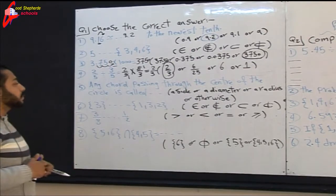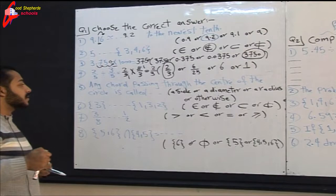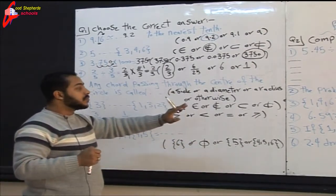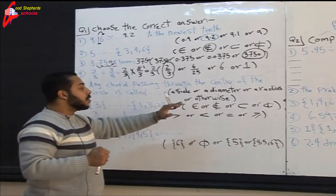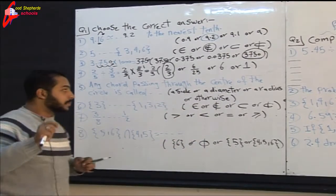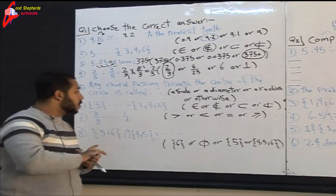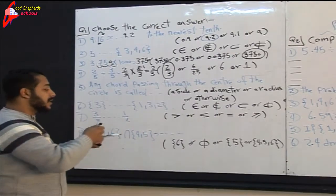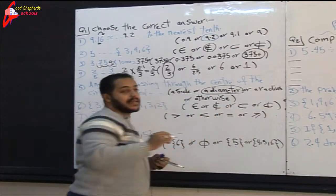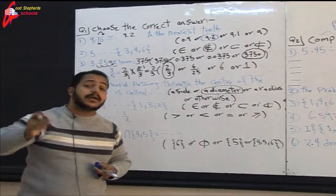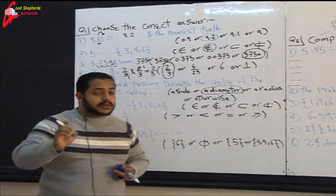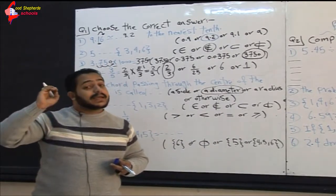Question five: any chord passing through the center of the circle is called a diameter. The choices are side, diameter, radius, or otherwise. The answer is diameter. Remember, the diameter is the longest chord in a circle.